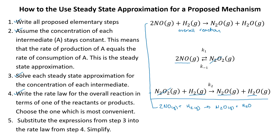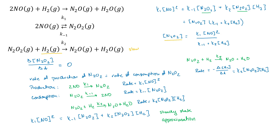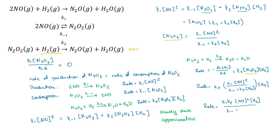For step five, we substitute the expression for N2O2 from step three into the rate law from step four. Taking the expression for N2O2 and plugging it in, we then gather up the K terms and concentration terms. This gives us a combined expression that we now need to simplify.